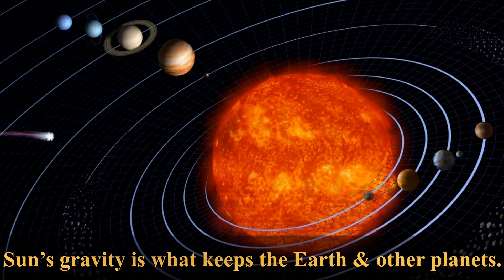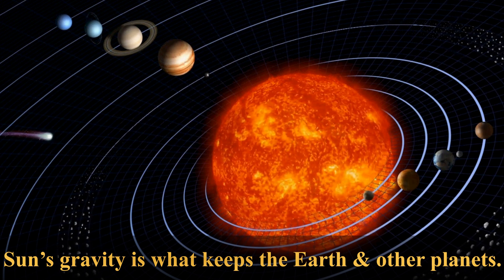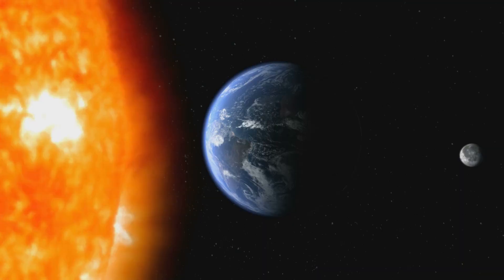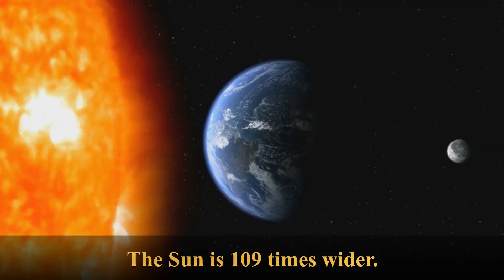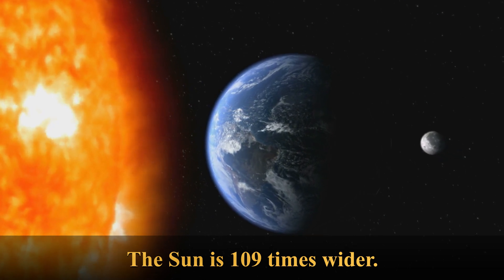The Sun's gravity is what keeps the Earth and other planets that make the solar system in orbit around it. The Sun is 109 times wider than the Earth and 330,000 times as massive.